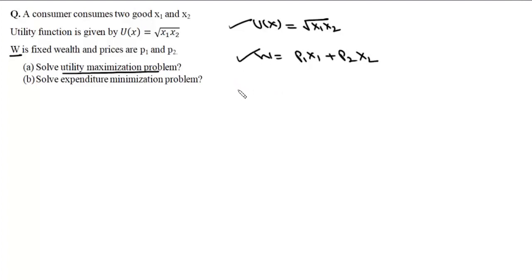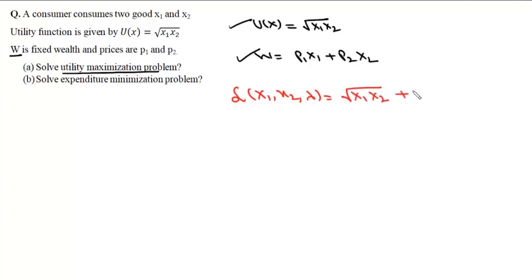For this problem we can write the Lagrangian function as L(x1, x2, λ) = √(x1·x2) + λ(w − p1·x1 − p2·x2). Now we will find its gradient and set it equal to zero.